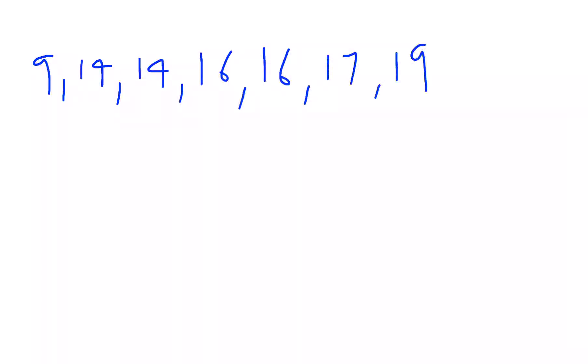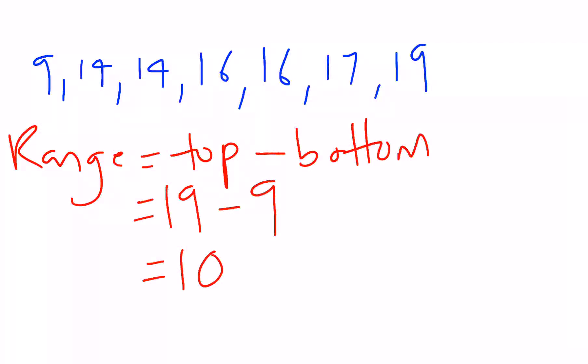We'll start with the range. The range is the top score minus the bottom score. So our top score here is 19, our bottom is 9, so the range is 10.